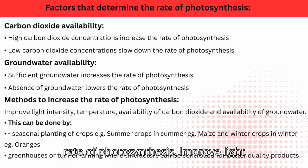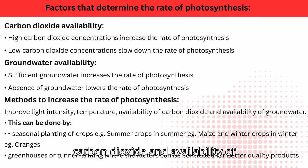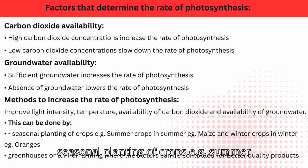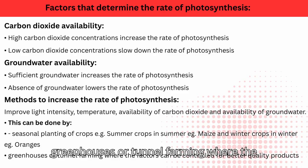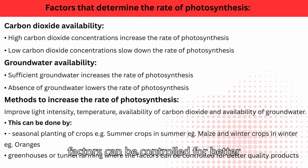Methods to increase the rate of photosynthesis: improve light intensity, temperature, availability of carbon dioxide, and availability of groundwater. This can be done by seasonal planting of crops, e.g. summer crops in summer such as maize, and winter crops in winter such as oranges. Also through greenhouses or tunnel farming, where the factors can be controlled for better quality products.